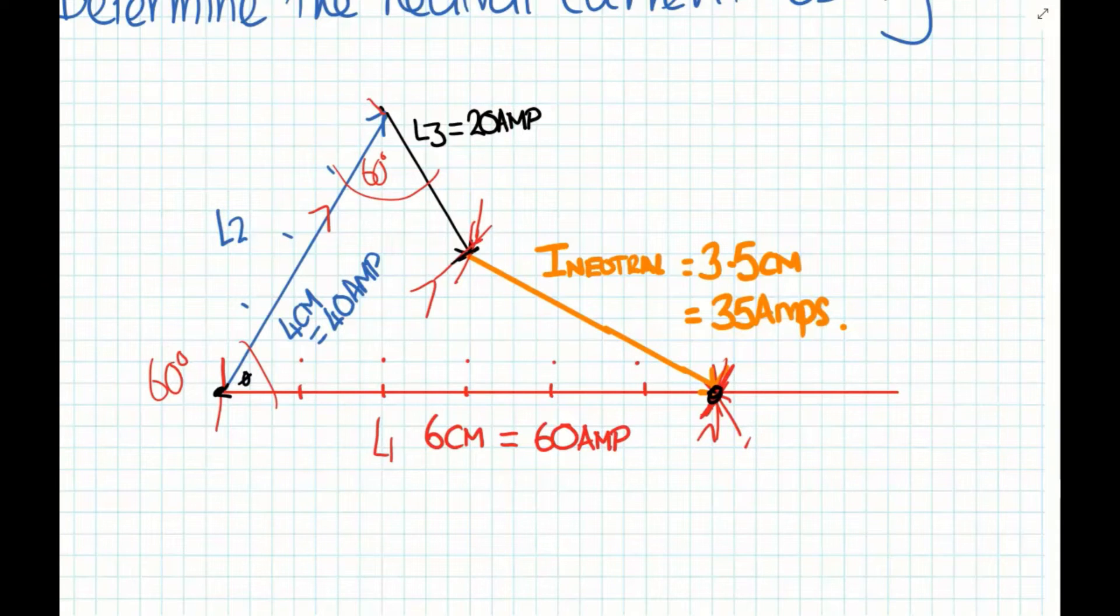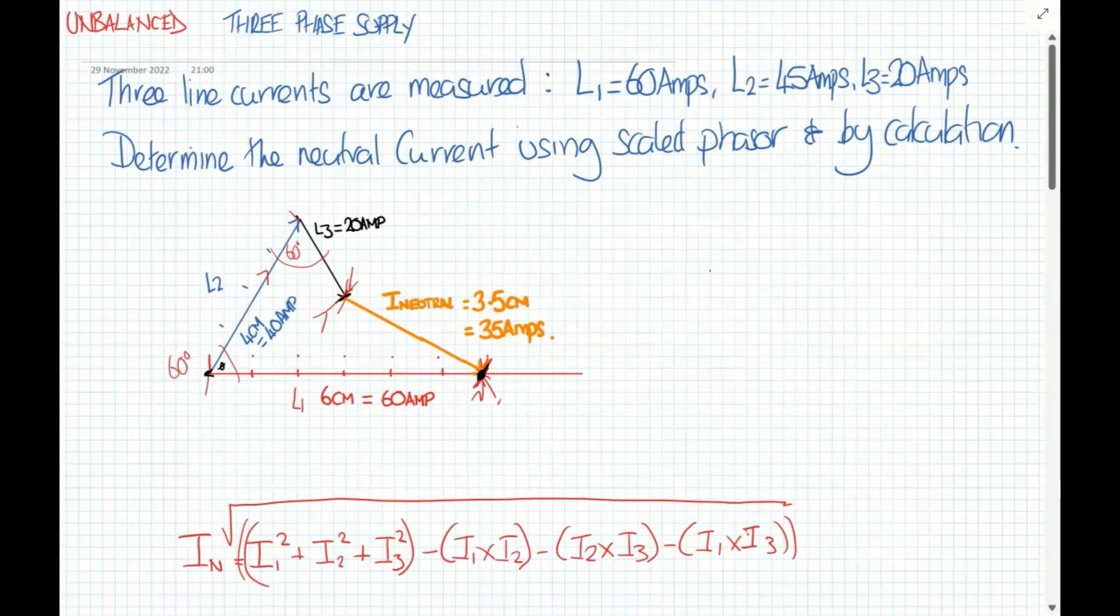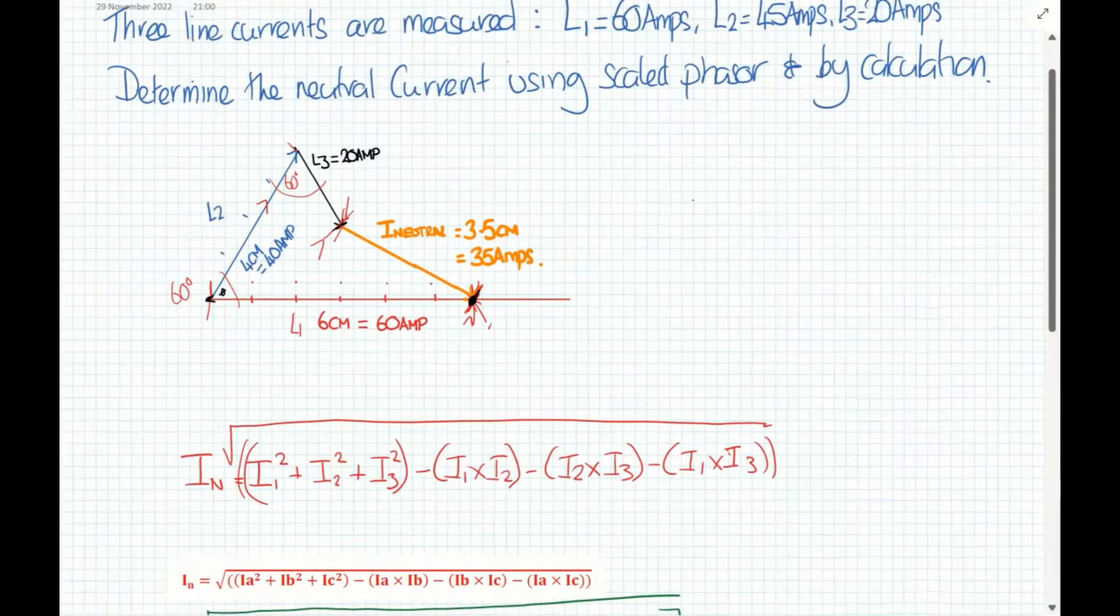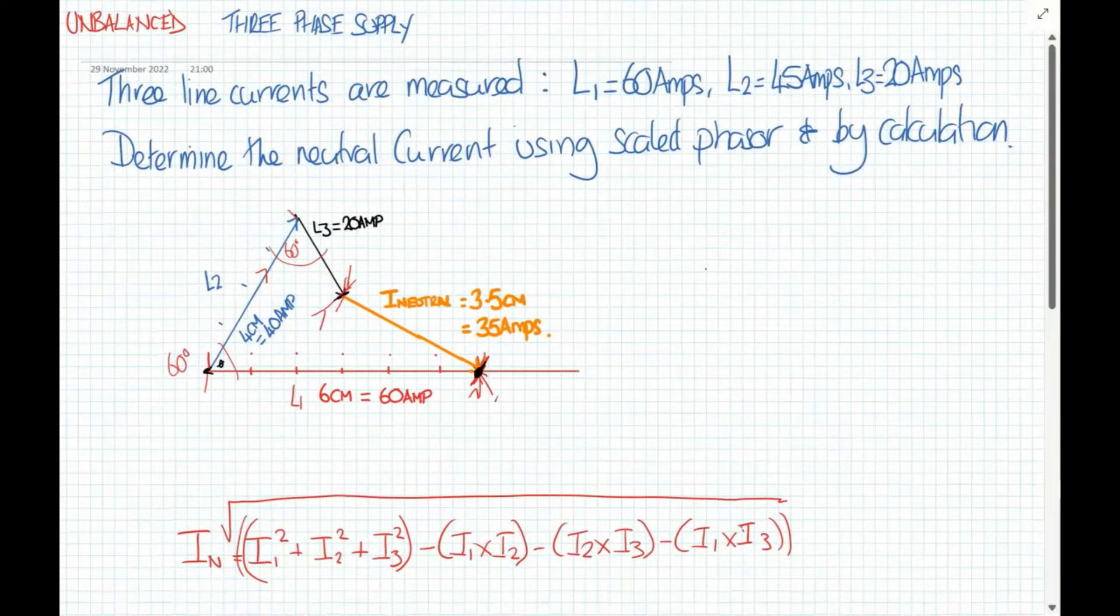You'll see that the phasor stops short. The distance from the end of L3 back to the start of L1 is the actual current that would be left in the neutral. We measure that to scale with a normal ruler very carefully. The bigger the drawing the more accurate your result will be. In this case I got 3.5 centimeters which is 35 amps neutral current. So L1 60, L2 45, L3 20, we're getting 35 amps in the neutral.